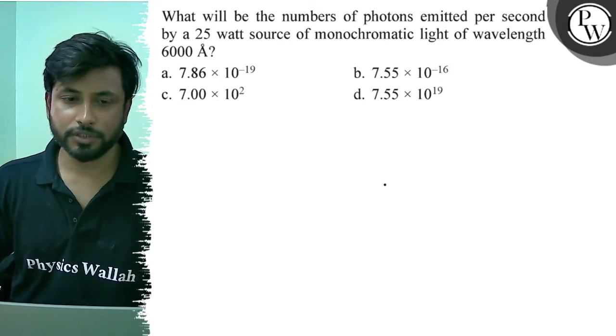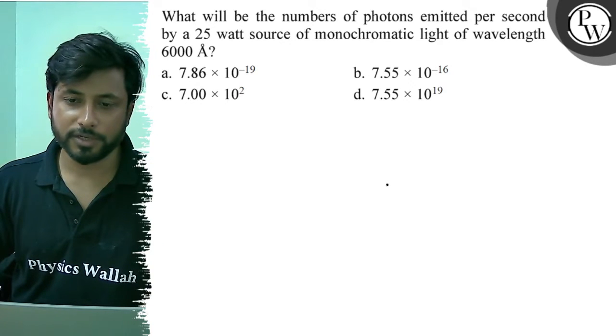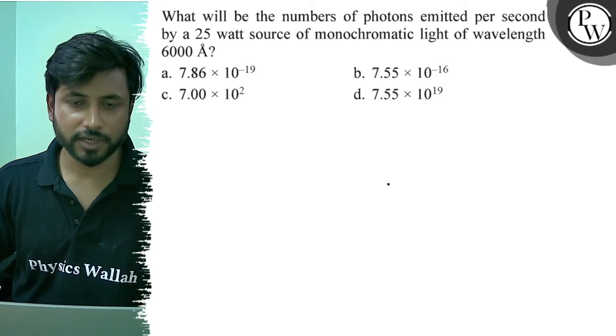Hello, let us see this question. What will be the numbers of photons emitted per second by a 25 watt source of monochromatic light of wavelength 6000 angstrom?